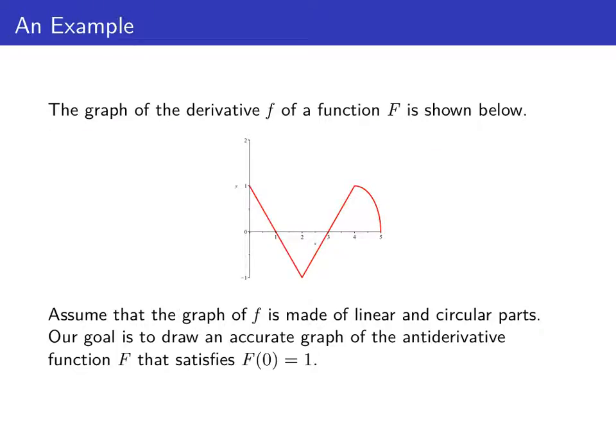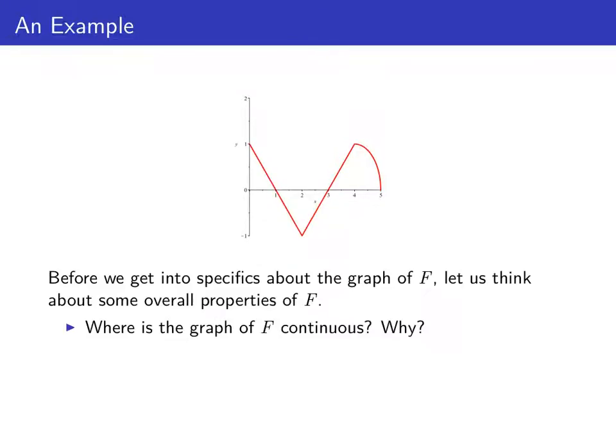We're going to work through an example to illustrate. Here we have the graph of little f, the derivative of a function big F. So big F is an antiderivative of little f. Our goal is to draw as accurate a graph as we can of that antiderivative — in particular, the antiderivative big F that passes through the point (0, 1). Before we get into specifics, let's think about some overall properties of this antiderivative.